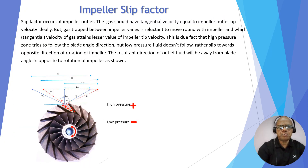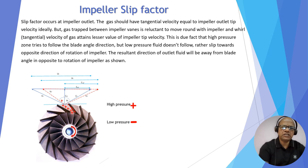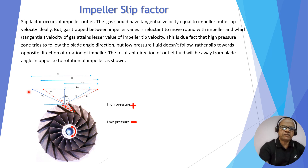Let's begin the discussion on slip factor. First of all, let us understand what slip is. Slip occurs at the impeller outlet, as shown here. The gas has to follow the tangential component along the blade angle, but it doesn't — it slightly goes backward. This is because when the impeller is rotating, there is a high pressure side and a low pressure side. The high pressure side follows the blade angle, but the low pressure side doesn't — it slightly diverts. So overall, the actual velocity comes out slightly in the backward direction, opposite to the direction of rotation, and this is called slip.